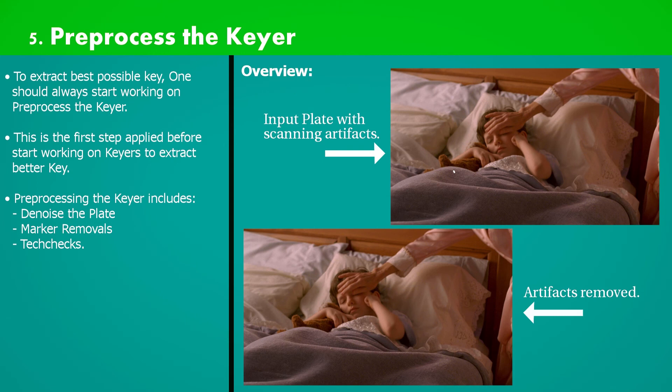Now moving on to the last lecture on preprocess, that is tech check. Tech checks are mainly artifacts arising during film negative scan processing for digitization. They occur due to light leaking on film negatives. Film negatives get contacted with light exposure, etc.